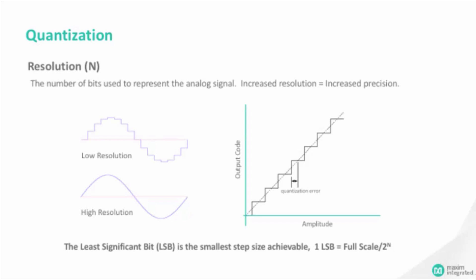In a sampling system, the LSB, or least significant bit, is defined as the smallest step size achievable. Therefore, an LSB is calculated as the full-scale voltage of the input signal divided by 2 to the power of N, which is the resolution of the ADC.